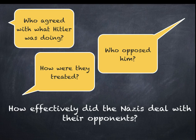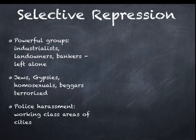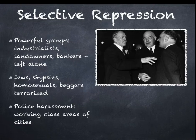You should make notes if you're a GCSE student under those three headings. Selective repression: not every group in society was repressed. Some were supporters of Hitler or were important to him in many ways. So powerful groups — the industrialists, landowners, and bankers — were left alone. Hitler wanted their support in order to fund his plans to prepare Germany for war and eventually prosecute that war.